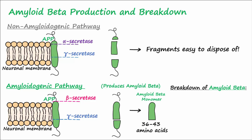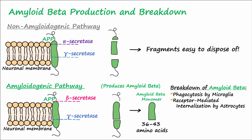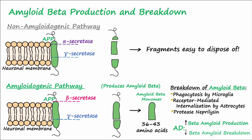Amyloid beta is normally broken down in the brain through phagocytosis by microglial cells and by receptor-mediated internalization by astrocytes. The protease neprilysin is also important in the degradation of amyloid beta. In Alzheimer's disease, there are increased amounts of amyloid beta due to increased production and decreased breakdown.